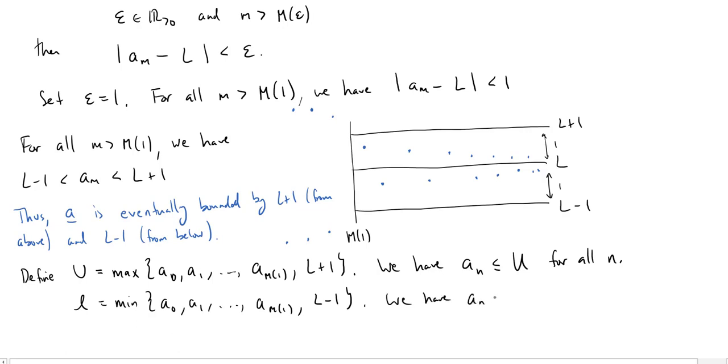And we're going to have that a sub n is greater than or equal to little l, the lower bound for all n. And therefore, u is our upper bound, and l is our lower bound.